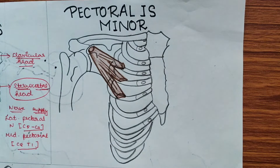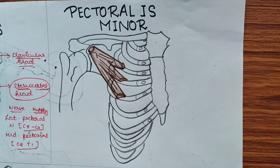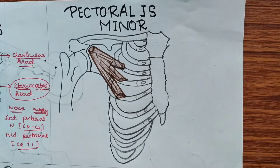Hello friends, so today we'll study about another muscle of the pectoral region which is the pectoralis minor. The pectoralis minor lies deep to the pectoralis major muscle. We'll look at its origin, insertion, nerve supply, and actions. First we'll see its origin.